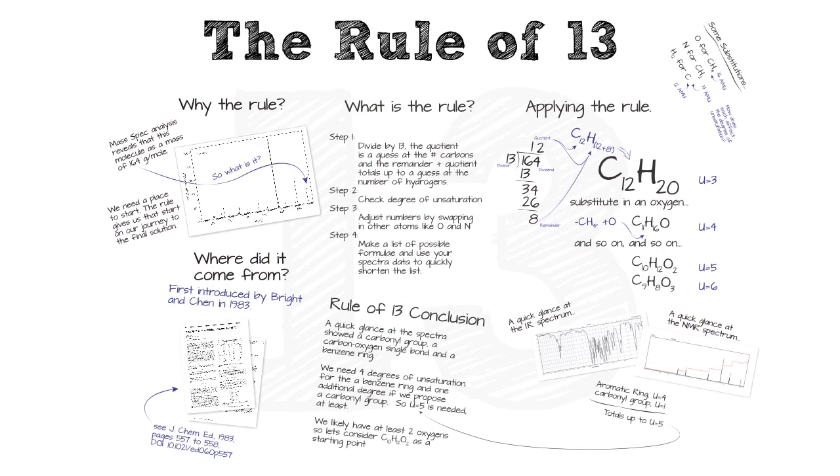So that's what we can do to sort of get a good stab at an initial structure. And then what do you do when you have a series of possible empirical formulas is you can go look at the spectra and see if anything stands out. What do I see there? Well I see some pretty strong peaks just under 1700. I see some peaks over 3000. I wonder.